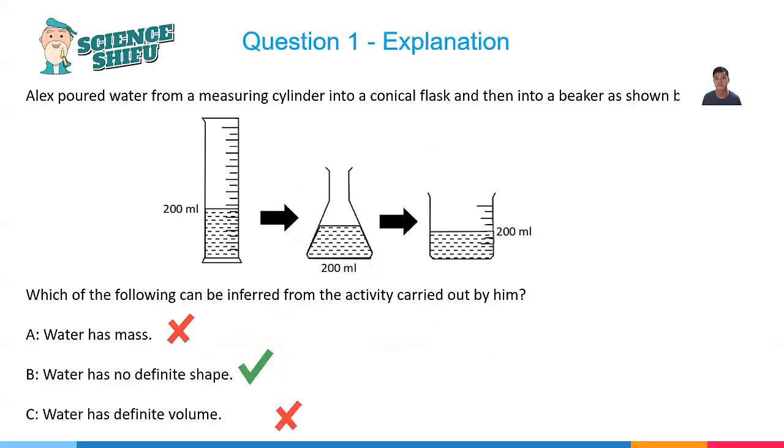To determine if the object has mass, we will use a balance. To determine if the object has a fixed volume or not, we will have to use a gas syringe. Once we know all this knowledge, we can then apply it to this question.